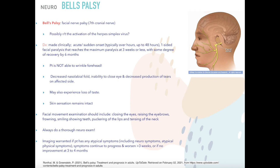A key identifying feature of Bell's palsy is that the patient cannot wrinkle their forehead — because the seventh cranial nerve innervates the entire face including the forehead. Other features include decreased nasolabial fold, inability to close the eye on the affected side, decreased tear production on the affected side, and possible loss of taste, though skin sensation remains intact.